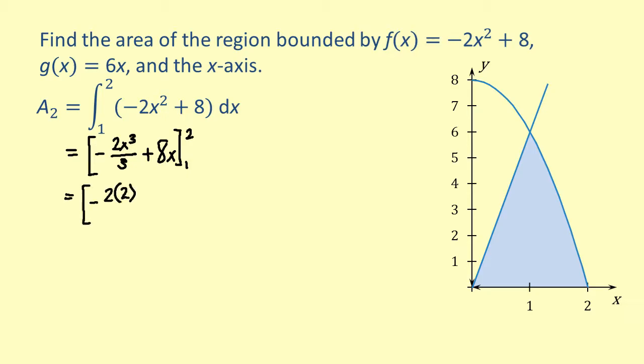Substituting the limits of integration, we get negative 2 times 2 cubed over 3 plus 8 times 2, and from that we'll subtract the expression negative 2 times 1 cubed over 3 plus 8 times 1. Simplifying all of this, we find that the area of the second region is 10 over 3.